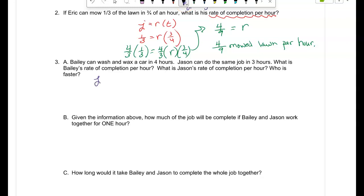Bailey can wash and wax a car in four hours. Jason can do the same job in three hours. I'm marrying Jason. What is Bailey's rate of completion per hour? And what is Jason's rate of completion per hour? So the job equals rate times time. So Bailey can finish one car in how long? Four hours. So what is his rate of completion? One-fourth. So really it's one-fourth of a car per hour. Now, what about Jason's time? So what's Jason? He can complete the full job in how many hours? Three. So his job equals rate times time. He can finish one full job in three hours. So what is his rate? Yeah, his rate is one-third. So for Jason's rate, it's one-third of a car per hour.